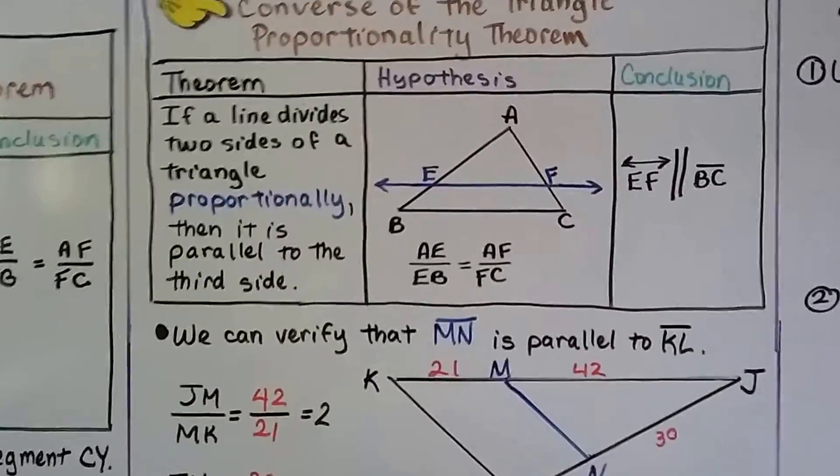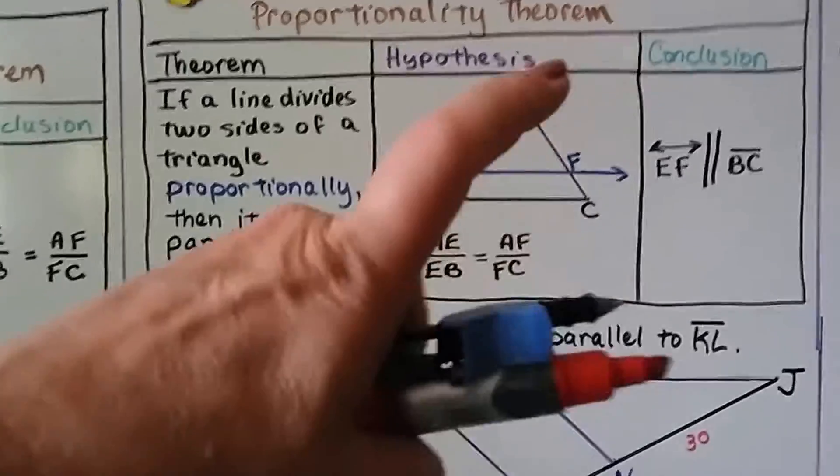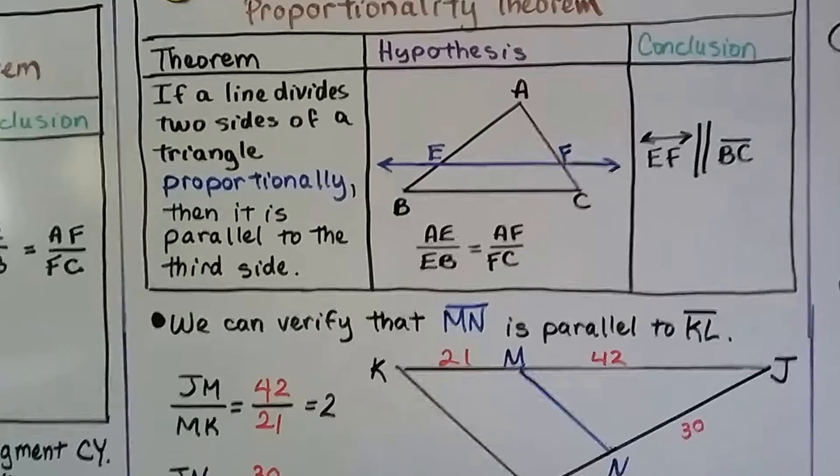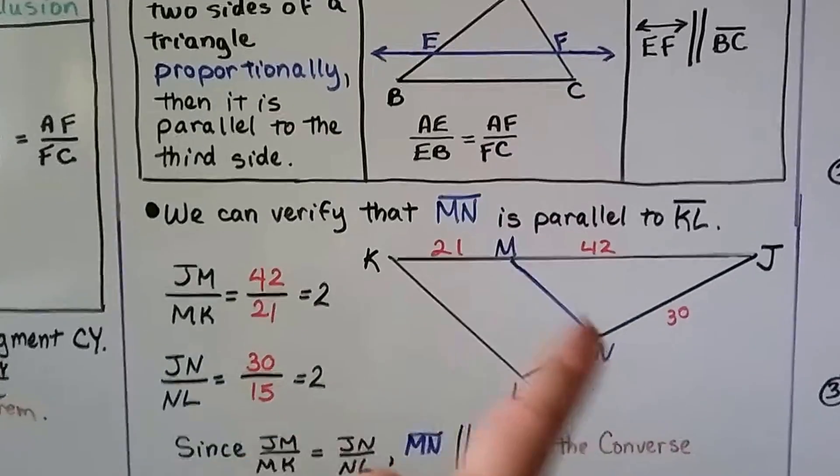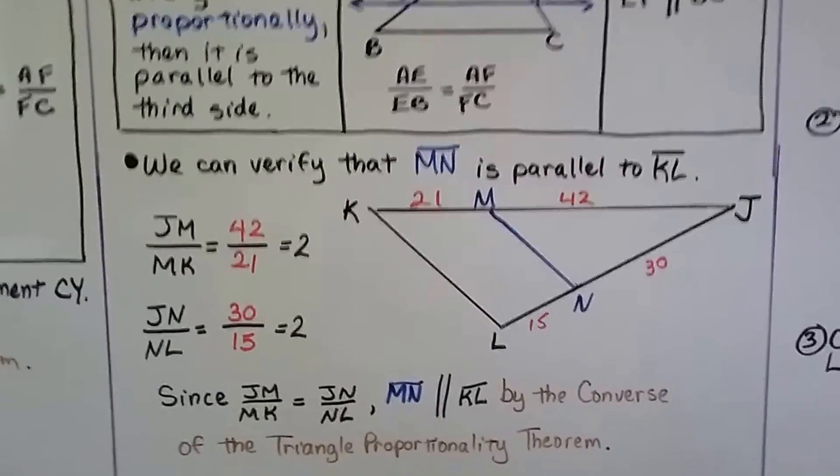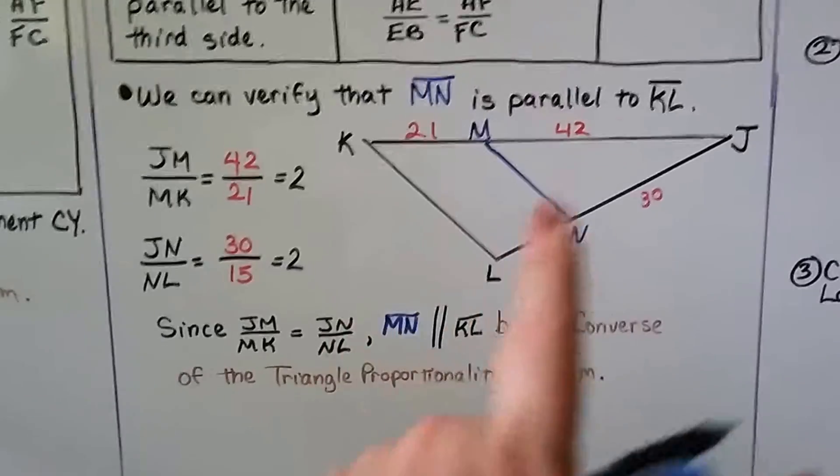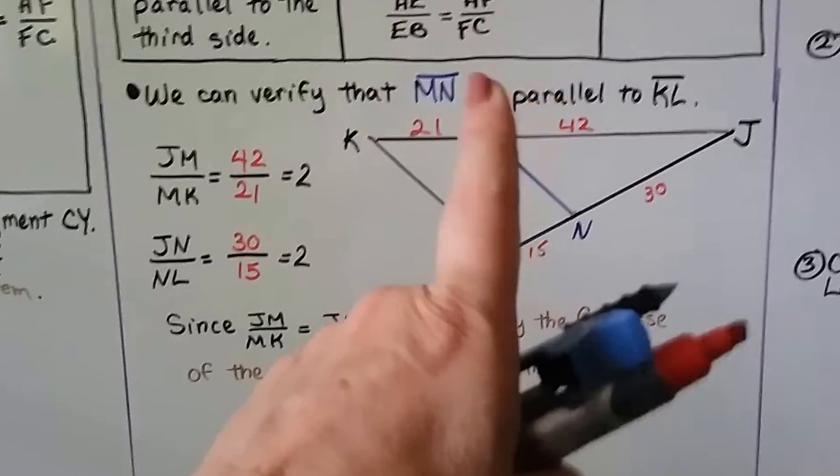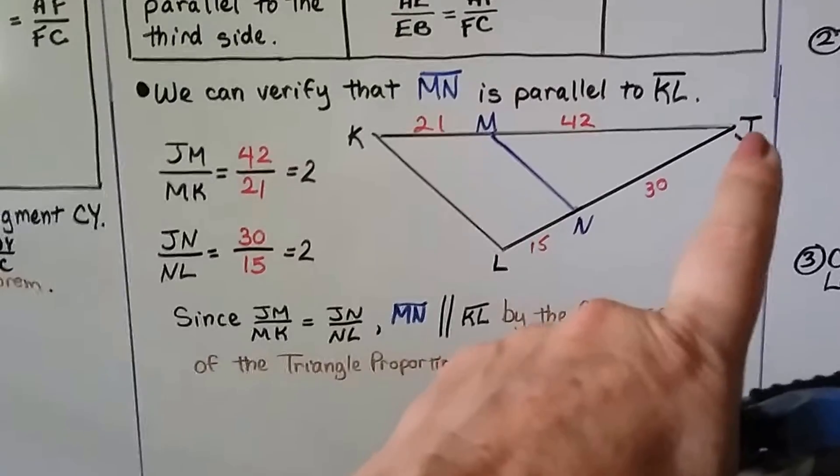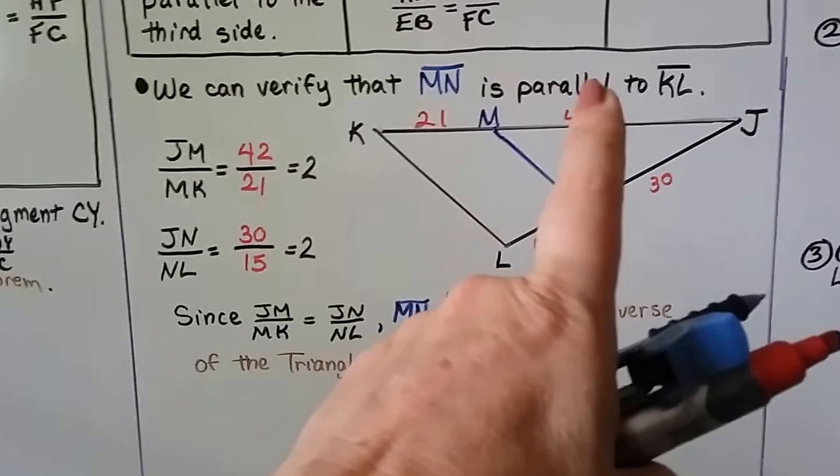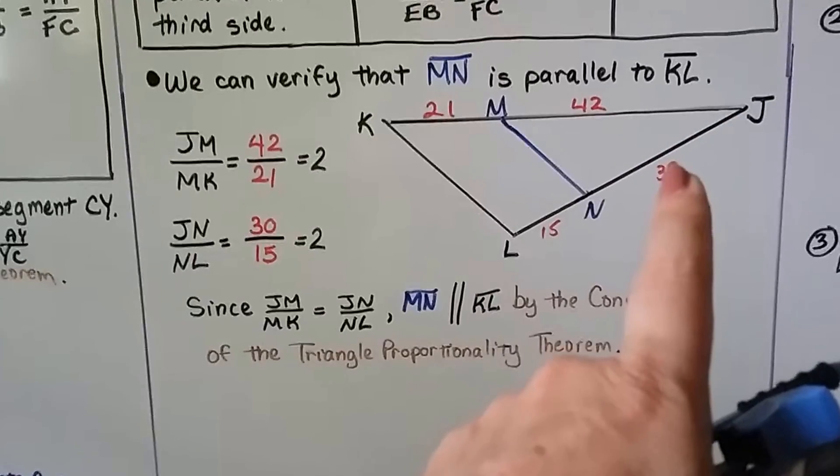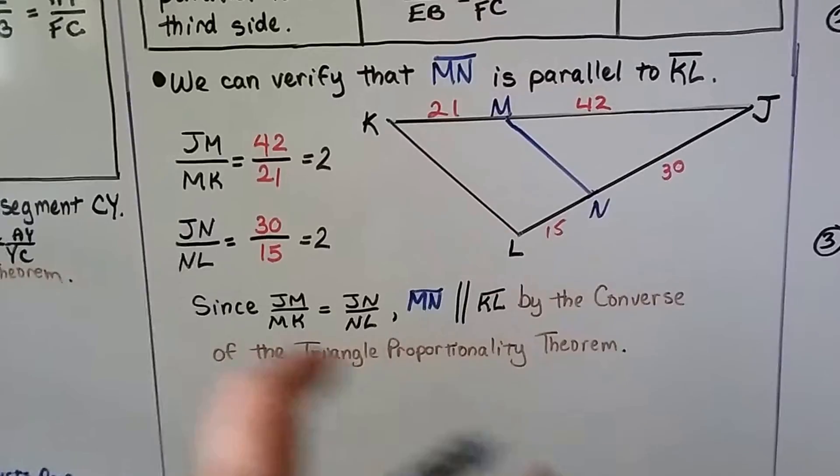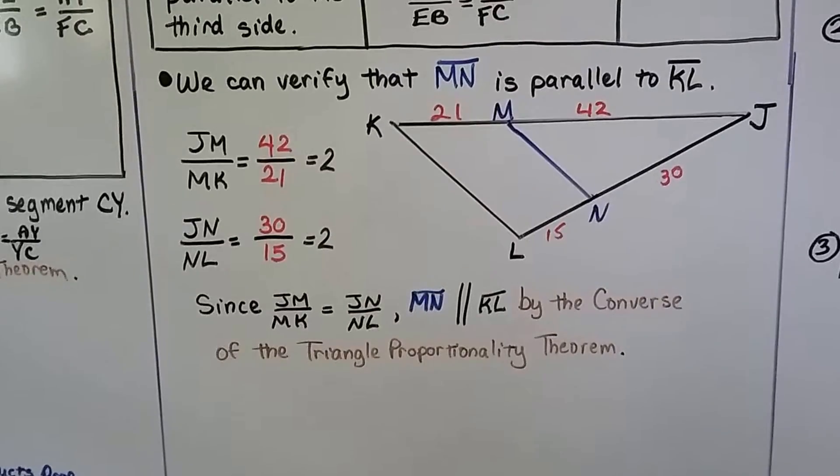It says if a line divides two sides of a triangle proportionally, then it's parallel to the third side. And we can verify that segment MN is parallel to segment KL. We want to make sure we've got these in the correct order with corresponding sides. So we can start with J and make the forty-two the numerator over the twenty-one. Then we can do the thirty as the numerator over the fifteen, so that they're in the right place.